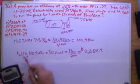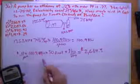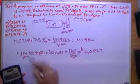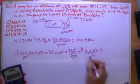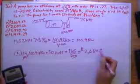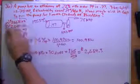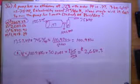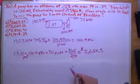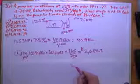And they're dollars because we have the kilowatts cancel out, the days cancel out, we lose the hours, and all we have left is the dollar. So it's $2,664.30, and that's how much it costs to run a pump that size for 30 days.